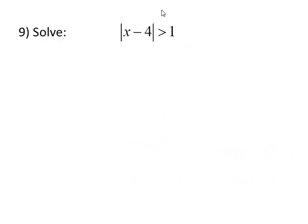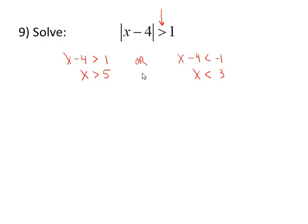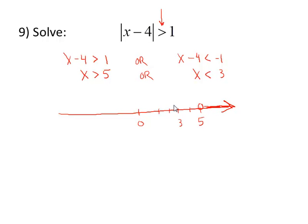On to an absolute value inequality involving the greater than symbol. In this case, we're going to break up the absolute value into two separate inequalities. Either the expression inside the absolute value is greater than 1, or it's less than negative 1. We'll solve both of these inequalities by adding 4 to both sides. Adding 4 in the first inequality gives us x greater than 5. Adding 4 in the second gives us x less than 3. On a number line: x greater than 5, open circle at 5, shade to the right; x less than 3, open circle at 3, shade to the left.